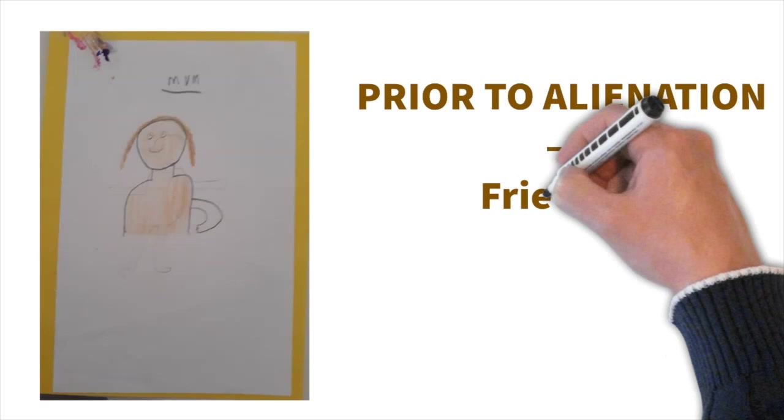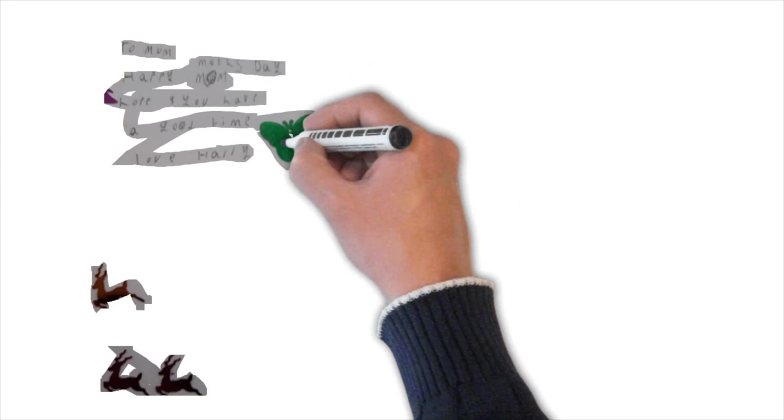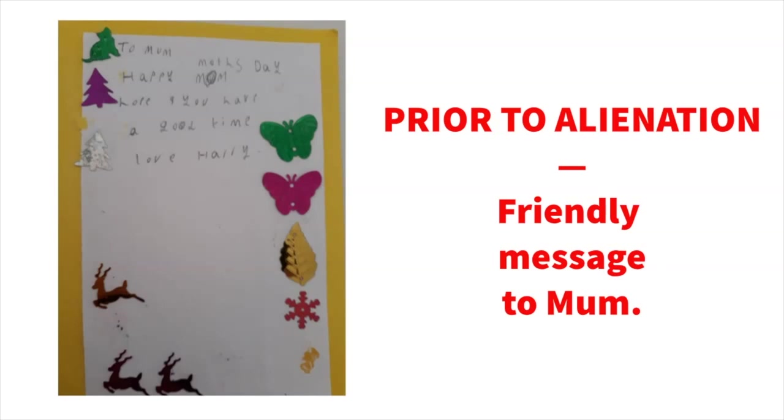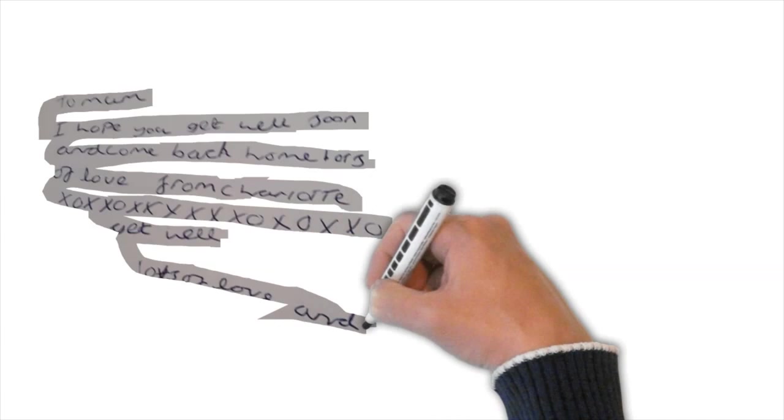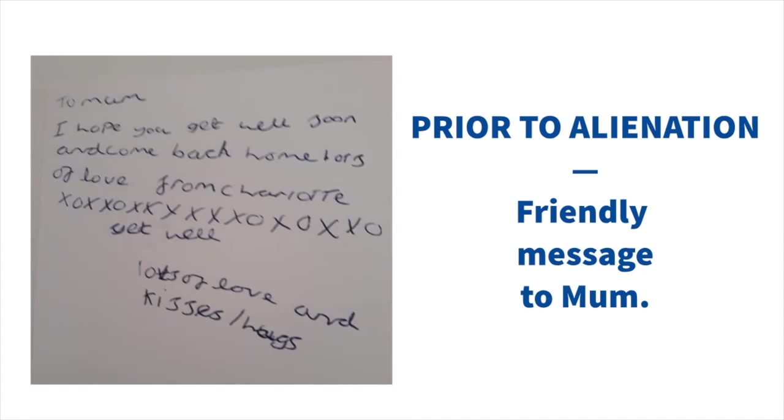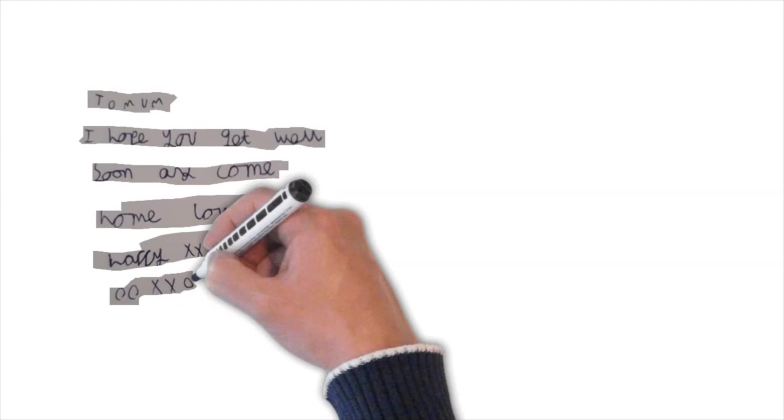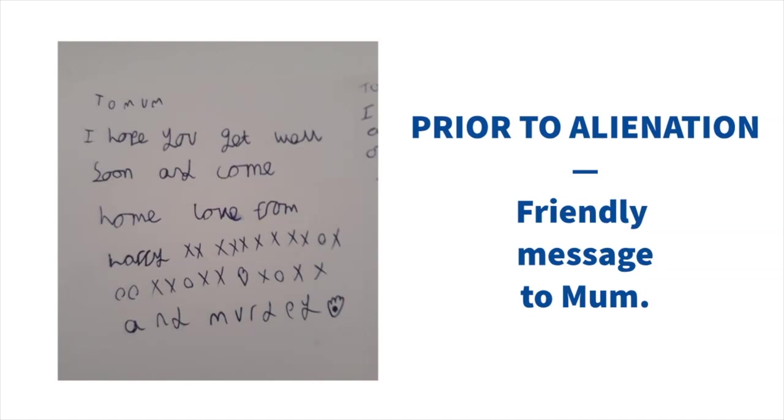Three siblings, severely alienated. Before alienation, a friendly message to mom. To mom, happy Mother's Day. Hope you have a 2002 time. Love Harry. To mom, I love you. Get well soon and come back home. Lots of love from Charlotte. XOXO. Get well. Love and kisses. Hugs. I hope you get well soon and come home. Love Harry. XOXOXO. All sent before alienation.